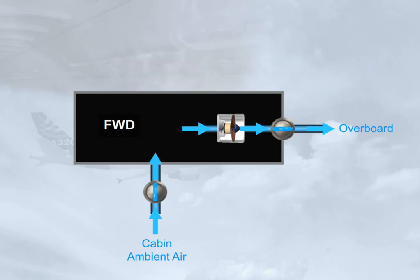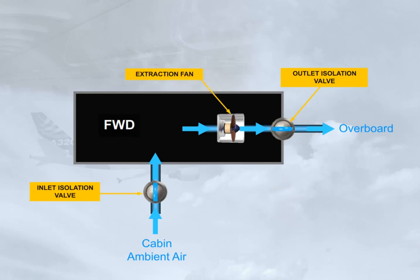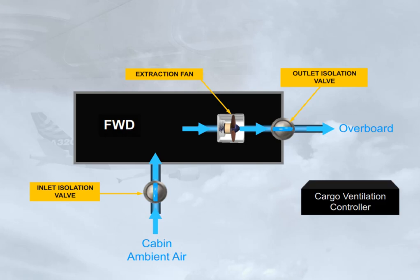The operation of the two isolation valves and the extraction fan is controlled automatically by the cargo ventilation controller. The extraction fan will be running if on ground, or if the differential pressure is less than 1 psi.